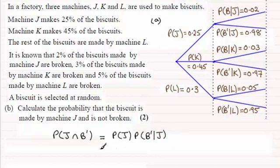And so that's just going to be 0.25 multiplied with 0.98. And if you work that out, you find you get 0.245.